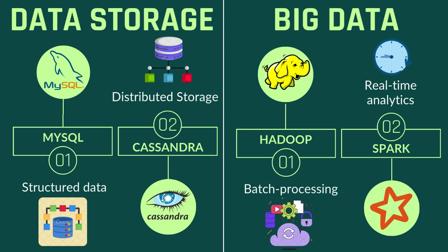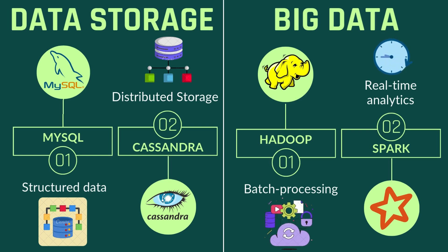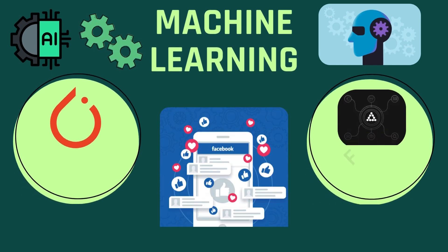Big data plays a crucial role in Facebook's operations. They use Apache Hadoop for batch processing and Apache Spark for real-time analytics. This allows Facebook to analyze vast datasets quickly, delivering insights that drive user engagement and feature development — think of this as Facebook's secret sauce for understanding your preferences.